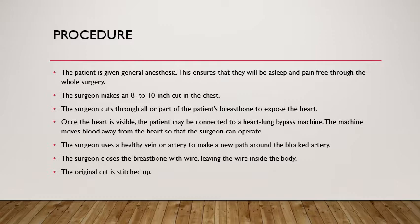Once the heart is visible, the patient may be connected to a heart-lung bypass machine. The machine moves blood away from the heart so that the surgeon can operate. The surgeon uses a healthy vein or artery to make a new path around the blocked artery. The surgeon then closes the breastbone with a wire, leaving the wire inside the body.